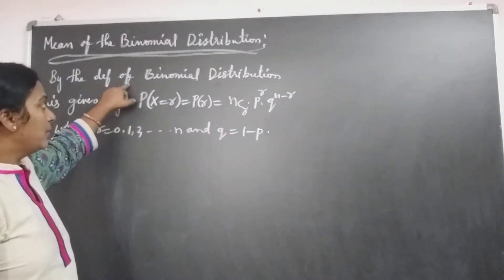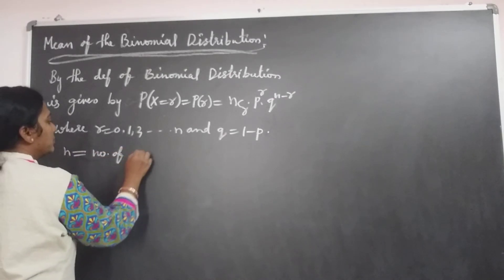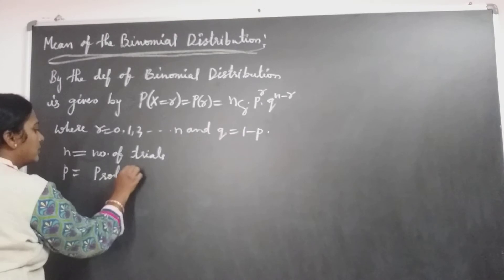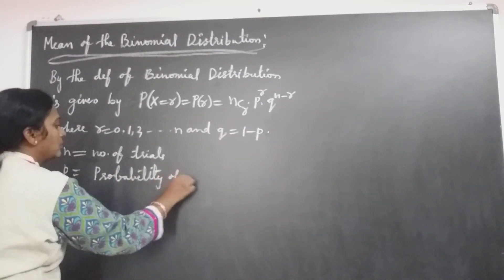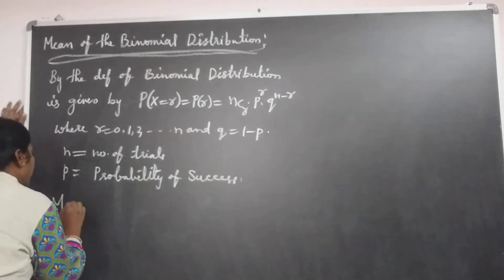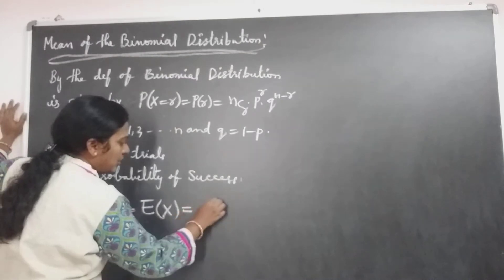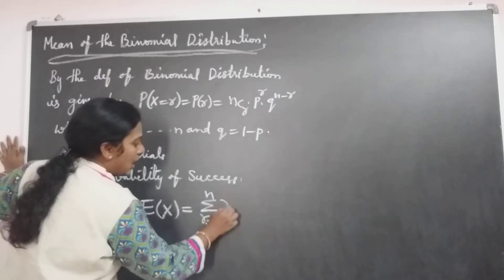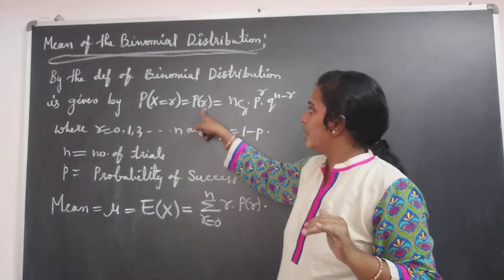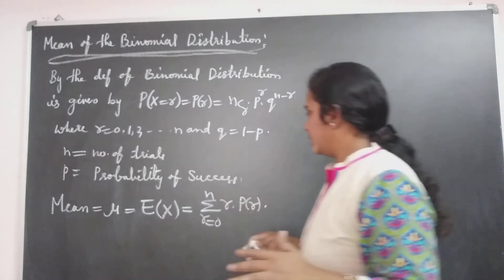This is the definition — the binomial distribution is defined in this way. Here, N is the number of trials, P is the probability of success, and Q is equal to 1 minus P. By this definition, the mean is equal to mu, which equals the expectation of x. This expectation of x equals sigma r equals 0 to n of r into P(r), where P(r) equals NCR into p power r into q power n minus r.